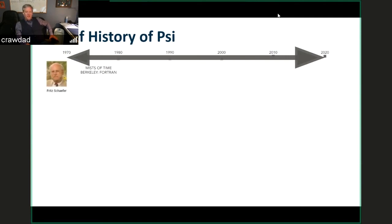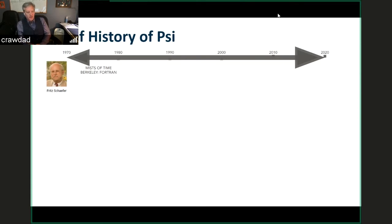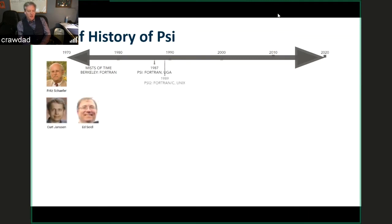I'll speak briefly about the long history of PSI, which goes back to the Berkeley days. The package really started around 1977 in Professor Schaefer's group at UC Berkeley. At that time the code was fully FORTRAN 77 and focused on analytic gradient techniques and configuration interaction techniques most heavily. When the Schaefer group moved in 1987 to the University of Georgia, it was still the same FORTRAN package, but they decided to rename it PSI — Berkeley didn't seem like the right name to use after they moved away.